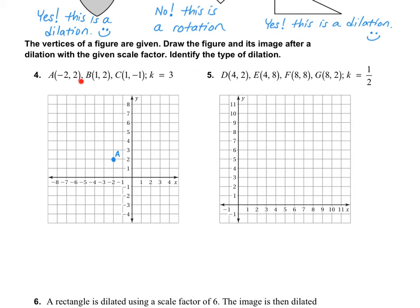My second point is 1, 2. So on my origin, I go over 1 and up 2. So this is point B. My third point is 1, negative 1. So we're going to go over 1 and down 1. So this is point C.